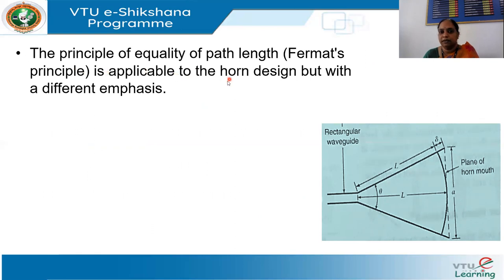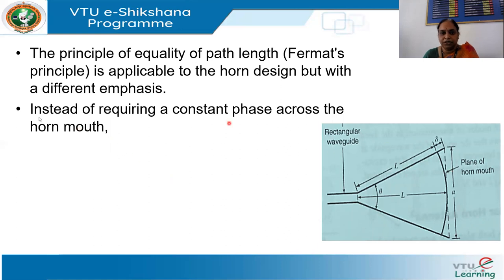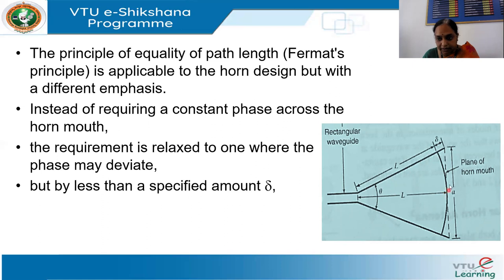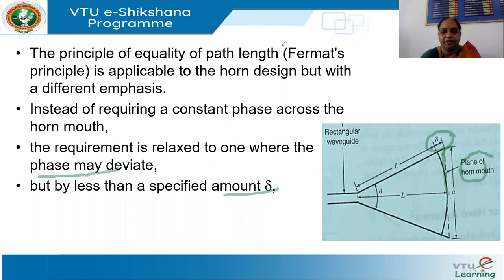Fermat's principle is applicable to horn design with a small difference. Generally a constant phase across the horn mouth is required. However, this requirement can be relaxed and the phase is allowed to deviate slightly. At the center the phase is consistent, but toward the edge — at the plane of the horn mouth — there is a variation. The phase may deviate by a small amount delta due to the circular nature of the geometry.